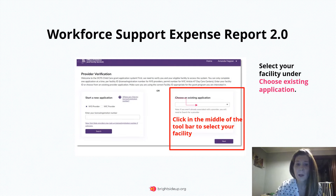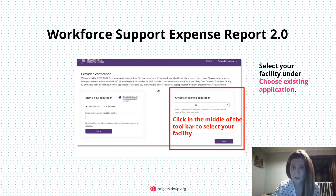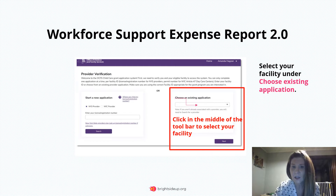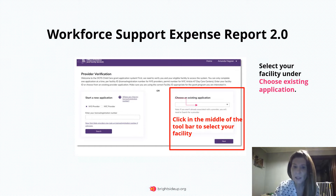Once you've clicked on Apply Review, you'll be brought to the Provider Verification screen. The first thing I want you to do is try to choose your facility under Choose Existing Application on the right hand side. Put your mouse cursor in the center of this toolbar and click on it. If your facility comes up, highlight your facility and click Next.